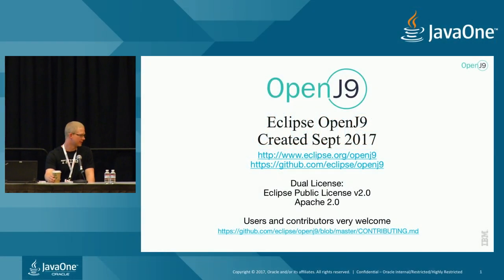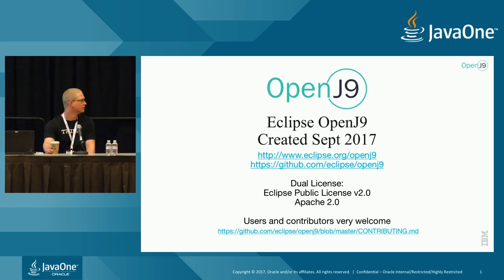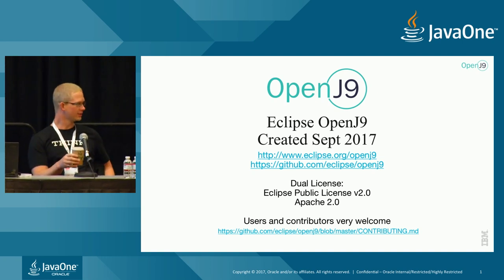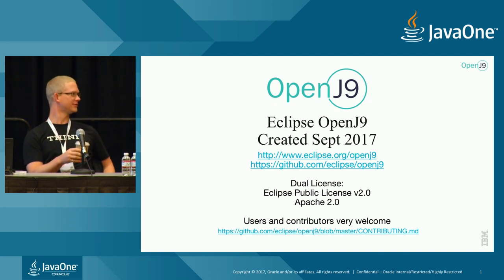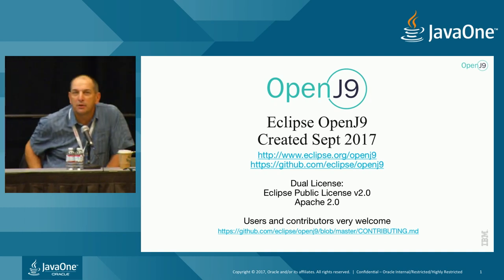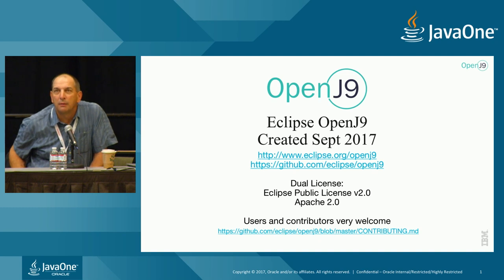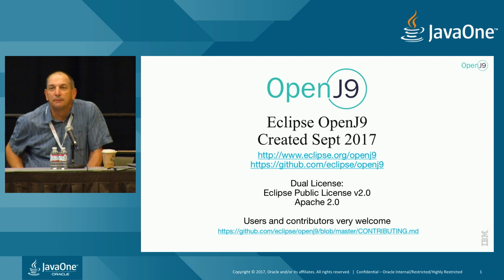We'll start by getting each of the experts up here to introduce themselves. My name is John Druvich. I'm the Java CTO and an IBM Distinguished Engineer, and I'm responsible for the IBM Java Runtimes at IBM. One of those is OpenJ9.